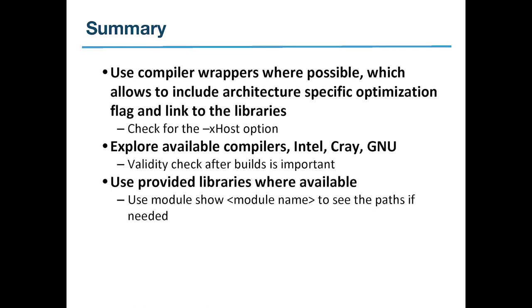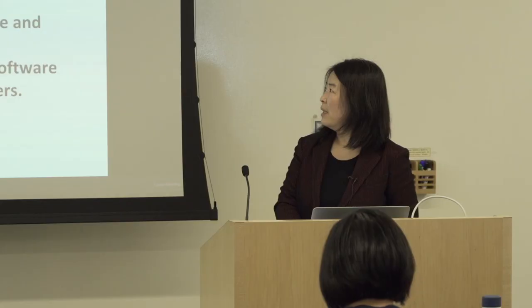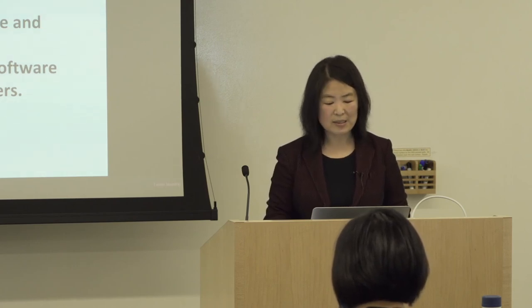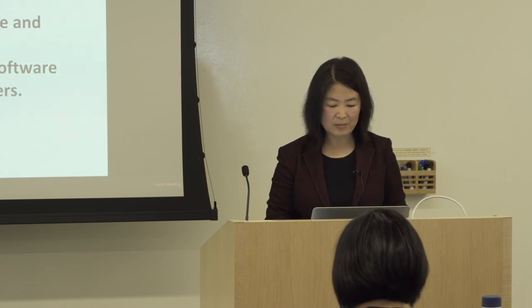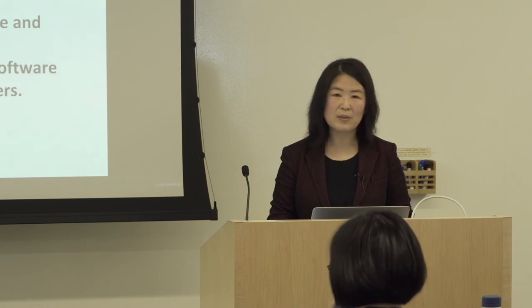In summary: use compiler wrappers — that's the number one tip. For KNL, remember to swap the architecture module by loading CrayPE-mic-KNL, and build on login nodes wherever possible. The verbose output of the compiler is really useful — you can learn a lot from it. Try out Spack — it's a really powerful tool, especially to build usr-lib64 static libraries that could be your dependent libraries.